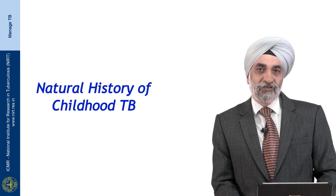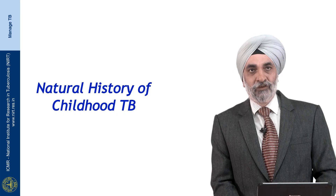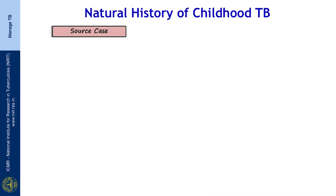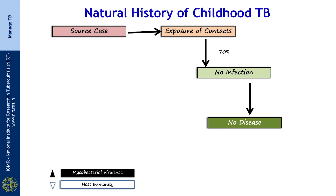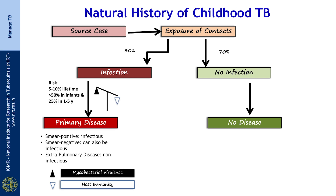Before we get to the diagnosis, it is important to understand the natural history of childhood TB. There is usually a source case — an adult who is infected — and this source case exposes many of its contacts, which leads to a possibility of infection. The risk of developing disease amongst those infected depends on several things, among which is how recent this infection has been and the age of the child.